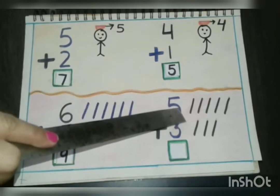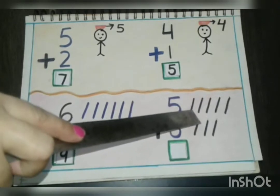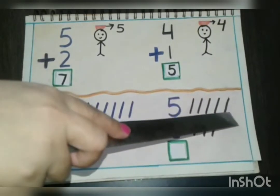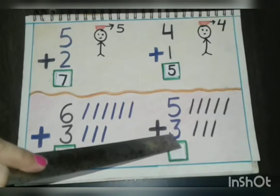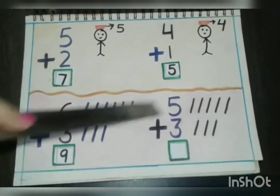Next, five plus three. How many lines we will draw? Five. Yes. One, two, three, four, five. And what is the other number? Three. So three more lines. One, two, three. Now let's count.